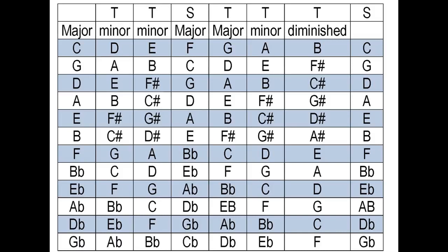The rows going across are your major scales, alternating blue and white. The first scale you come to is C, and the notes in the C major scale are C, D, E, F, G, A, B, C. Those are all the notes in that scale.